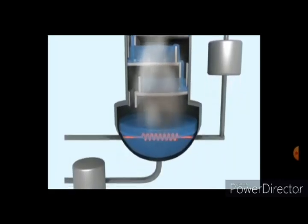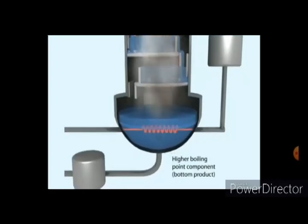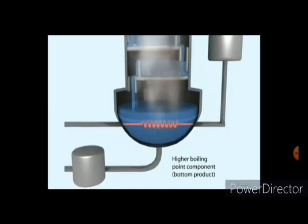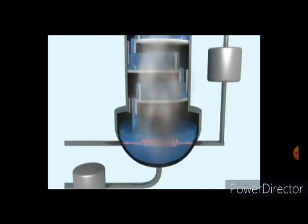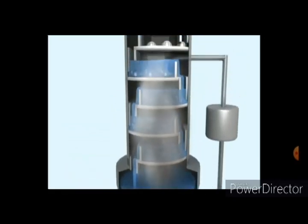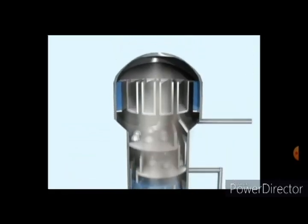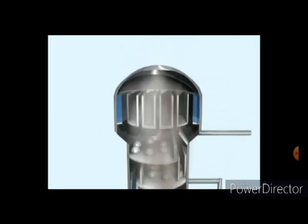Some vapor escapes from the top of the column and is returned to a liquid state in the condenser. Some of this liquid is returned to the column as reflux and the remainder is the top product or distillate. Vapor and liquid phases on a given plate approach thermal, pressure, and composition equilibrium to an extent depending upon the efficiency of the plate.